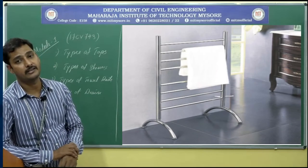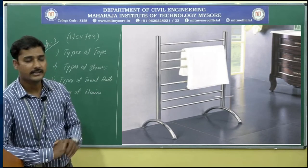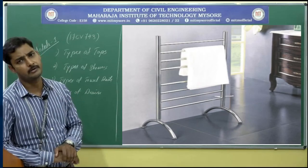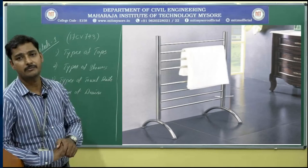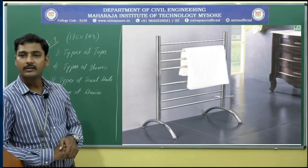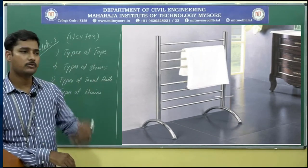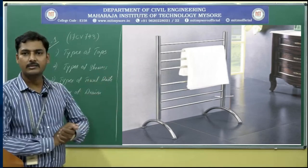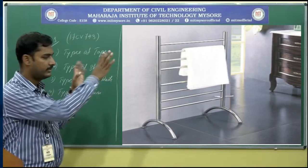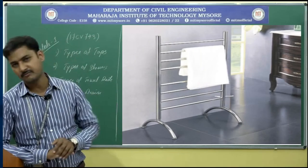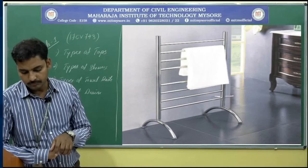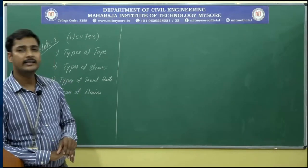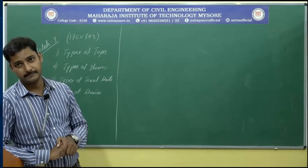The last type is free standing towel rails. These are preferable in all cases because wall mounted towel rails are permanent at one point and cannot be removed or relocated. Free standing towel rails can be moved around the room and placed against walls without drilling holes. They are also light in weight, making them very convenient.